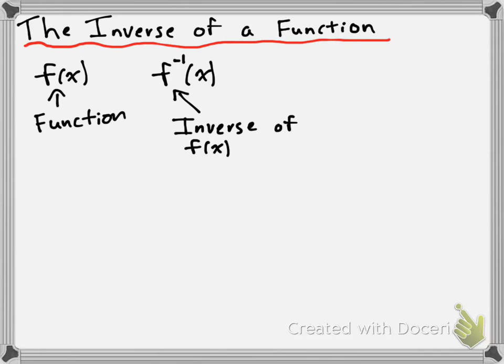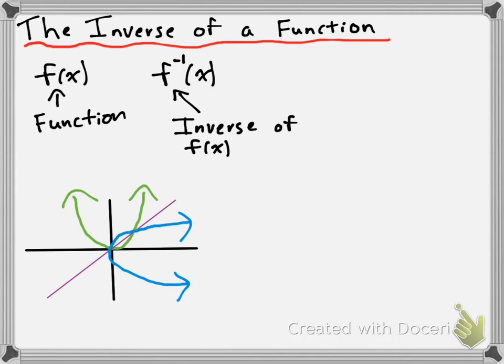One of the properties that you talked about with the inverse of a function is going to involve the graph. Suppose I have a graph with two functions — two parabolas. One opens up, and one opens to the right. If the green function is my function f of x, then the blue function is going to be my function f inverse of x. A function f of x and its inverse f inverse of x are going to have graphs which are reflections of one another about a special line, and that line is y equals x. So if you were to reflect f of x in the line y equals x, you would end up with a graph that looks like f inverse of x.